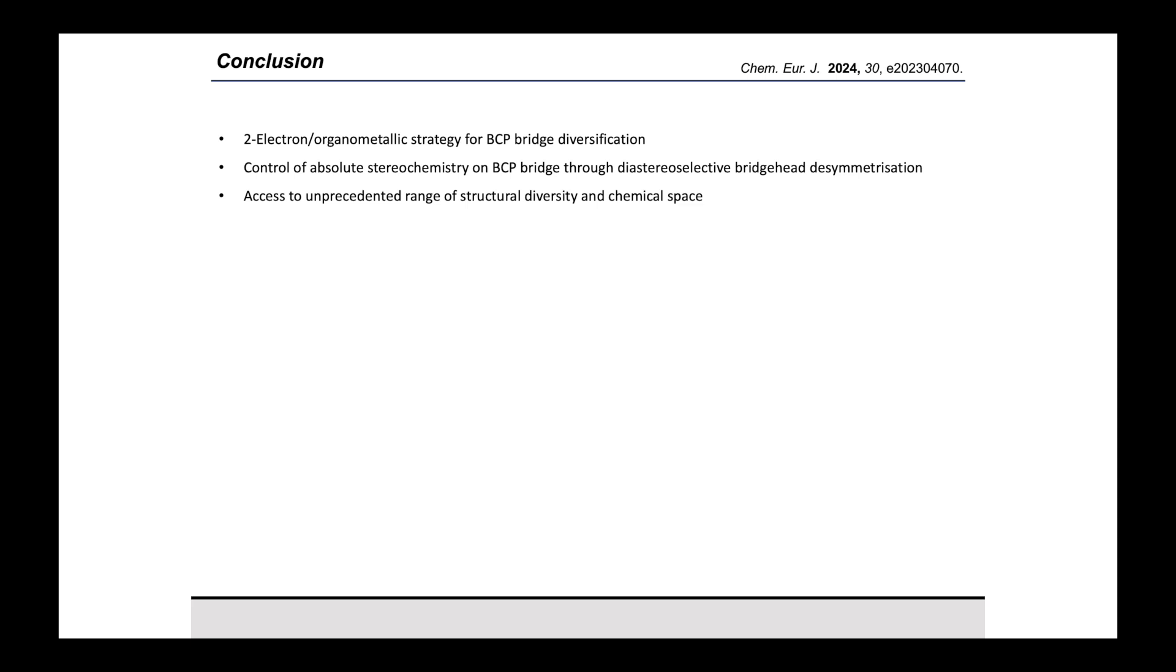To summarize, in this work we have shown the first example of a two-electron or organometallic strategy for divergent functionalization of the bridge position of bicyclo[1.1.1]pentanes. We have also shown only the second example of a method capable of controlling the absolute stereochemistry on the BCP core, and the first to do so through a late-stage bridgehead desymmetrization. Overall, our chemistry allows modern practitioners to capitalize on the significant volume of literature surrounding classical organolithium reactions, and in doing so, enables a significant expansion in accessible chemical space for use in contemporary drug discovery projects.